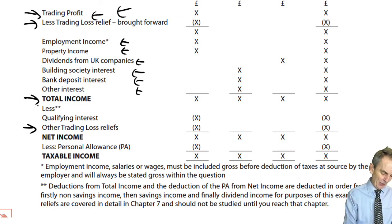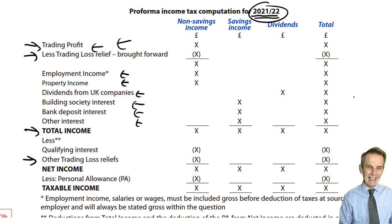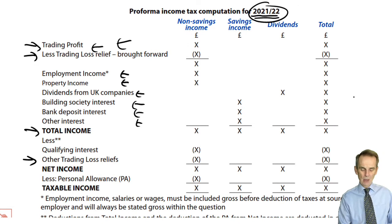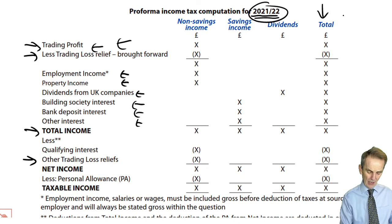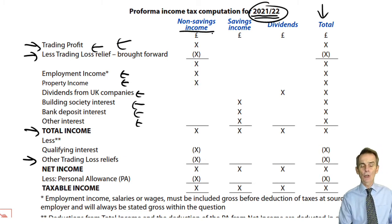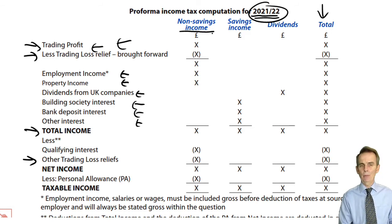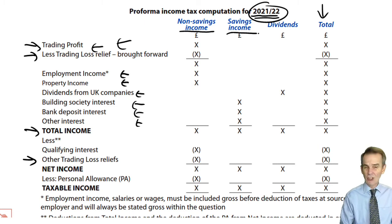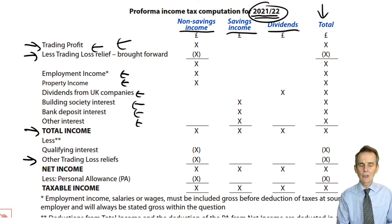The first exercise is to derive total income by listing sources of income, but not just in a single line — instead, analysed by type. In the first column we have non-savings income: income from work, i.e. employment and self-employment, but also property income. Savings income is just interest income. And dividends — the clue's in the name — is just dividend income.